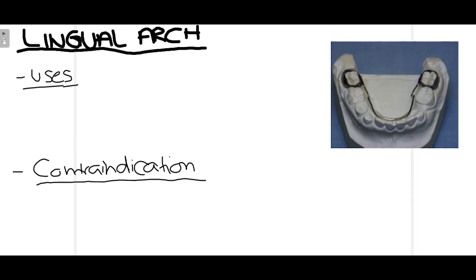The next appliance is the lingual arch. You can see how the bands are inserted over the molars and a wire-like structure is present lingually across the incisors. The main use of this is when multiple primary posterior teeth are lost.